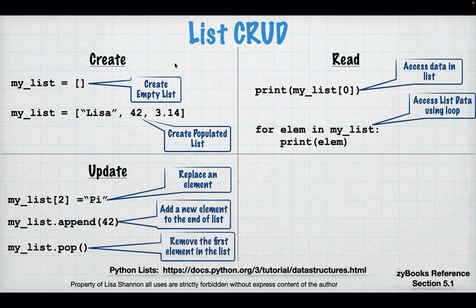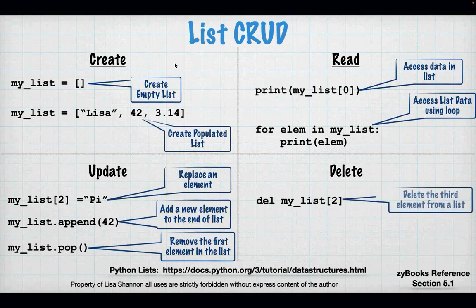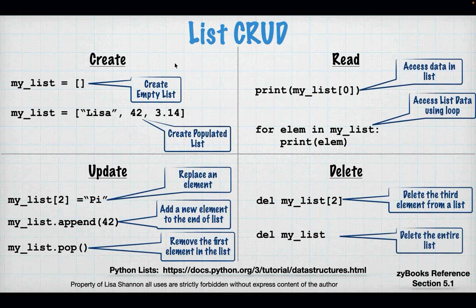I can also take the first element off of the list - I can pop it. So it's just like a PEZ dispenser - you pop an element off the top of the list at index zero. For delete, I can delete an element using del my_list at index value two. Or I can delete the whole thing. Del is a keyword - it means delete. You can delete an element or you can delete the whole thing.